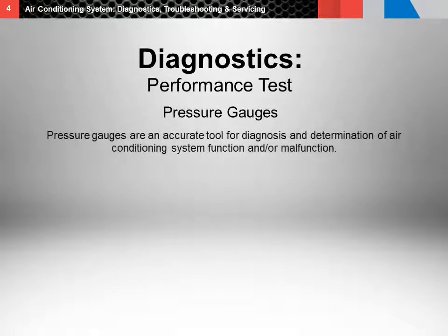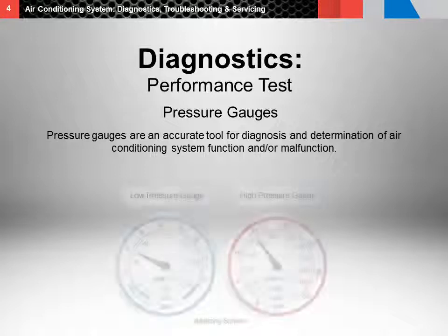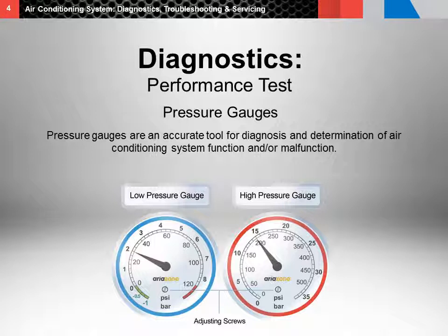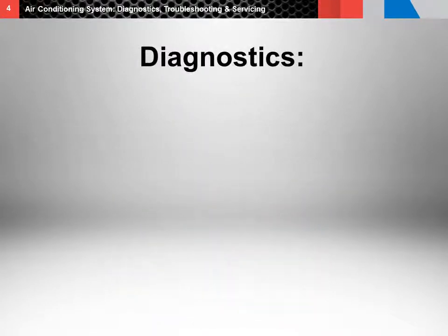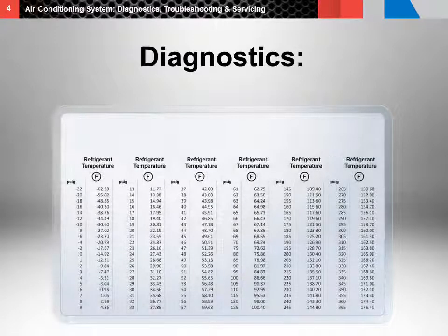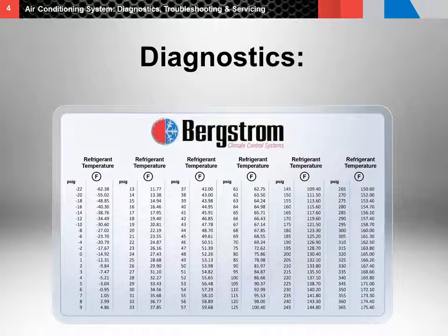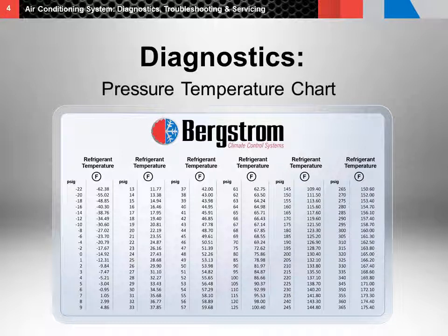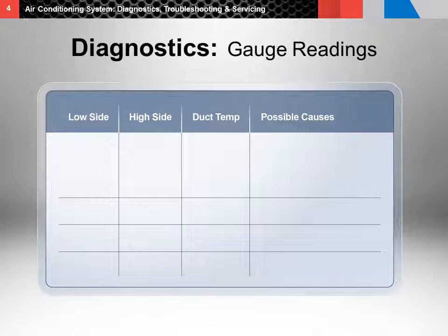Pressure gauges are an accurate tool for diagnostics and determination of air conditioning system function and/or malfunction. It is essential that gauges work correctly and reflect actual pressures within the system. If gauges are inaccurate, it is necessary to have them calibrated prior to use. It is important to understand that there is no such thing as normal pressure of an air conditioning system, because the system pressure depends on the outside temperature. Pressure readings and temperatures change continuously. A pressure-temperature chart will help you determine if the air conditioning system pressures and system operation are correct. Remember, these readings should be used in conjunction with temperature measurements.